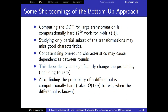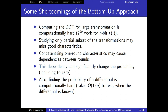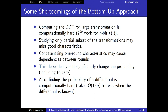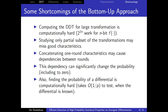Problems with the bottom-up approach: for ARX ciphers, constructing the DDT for large word additions takes time 2^(2n), which is very time consuming. Usually people look at only specific transitions, but then may miss good ones. Another common problem is that concatenated one-round characteristics — even from automatic tools — might not be consistent: transitions that contradict each other appear, which is well-known in boomerangs but also exists in differential and linear cryptanalysis. This dependency can alter the probability all the way to zero.